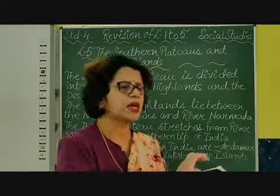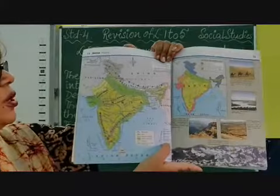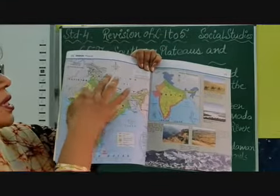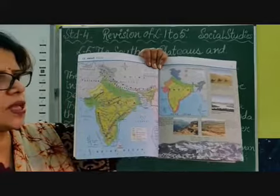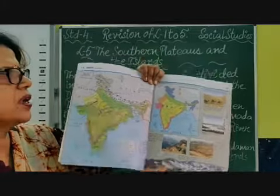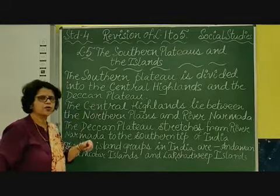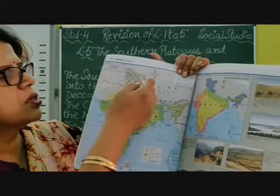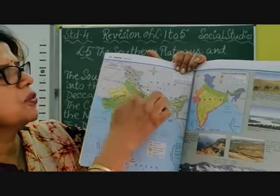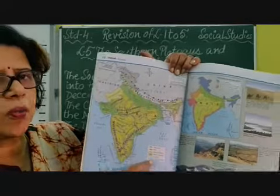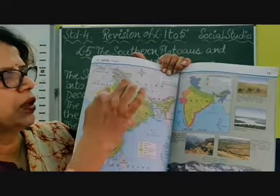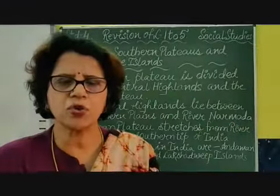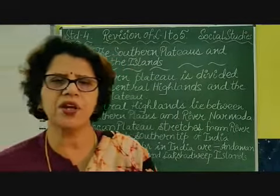Talking about the southern plateau, if you look at this map carefully you will see our northern plains, and just to the south of the northern plains lies the southern plateau. As you can see, it is mostly in the central as well as the southern part of India. This plateau is divided into two parts: the central highlands and the Deccan plateau. It is triangular in shape and it is very rocky and uneven.